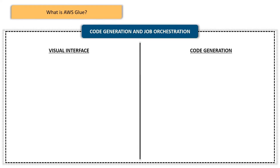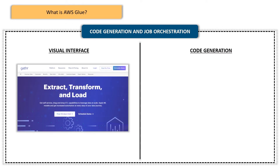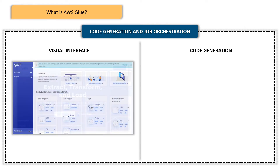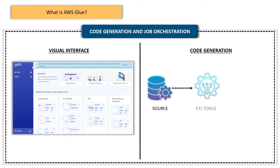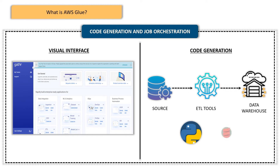AWS Glue offers two ways to create ETL workflows: a visual interface and code generation. For those who prefer a visual approach, AWS Glue provides an intuitive graphical interface where you can visually design your ETL workflows by connecting data sources, applying transformations, and defining output destinations. If you're more comfortable with coding, AWS Glue generates Python or Scala code that you can customize to fit your specific requirements.